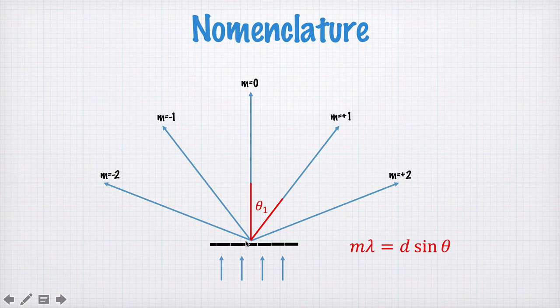Travelling off in this direction we have m equal to plus one, so the path length difference from successive slits is one wavelength. This would be two wavelengths. In the other direction we have m equal to minus one, m equal to minus two, so that would be extra path from slits on this side compared to this side. This is called the diffraction orders, and we give them this index m, m being the number of wavelengths difference between the paths from successive slits.